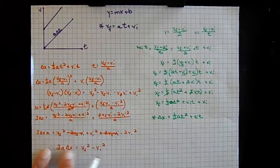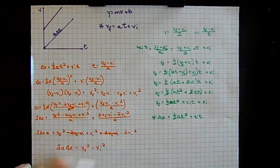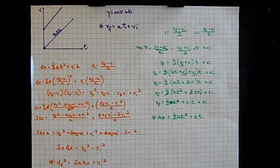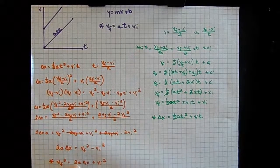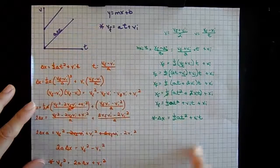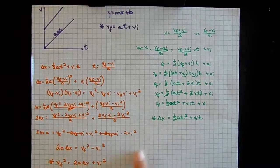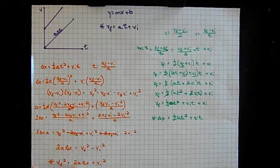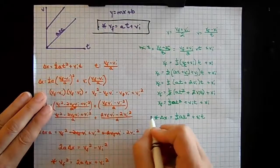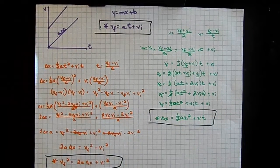Isn't that beautiful? We have this really nice third equation. When we combine those two expressions and eliminate time, we end up with Vf² = Vi² + 2·a·Δx. So now we have three equations relating acceleration, velocity, position, and time. If we don't know change in position but know acceleration and time, use equation one. If we have change in position, acceleration, and time, use equation two. If we have change in position and acceleration but no time, use equation three.